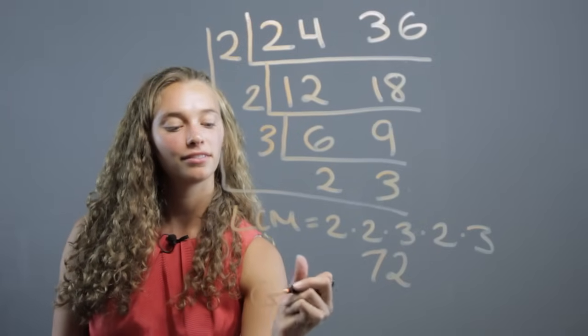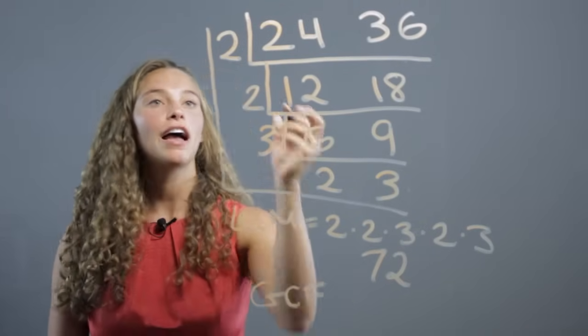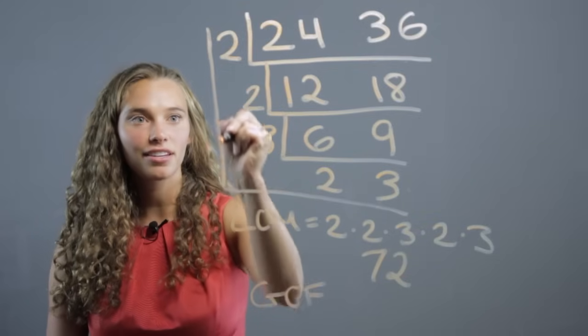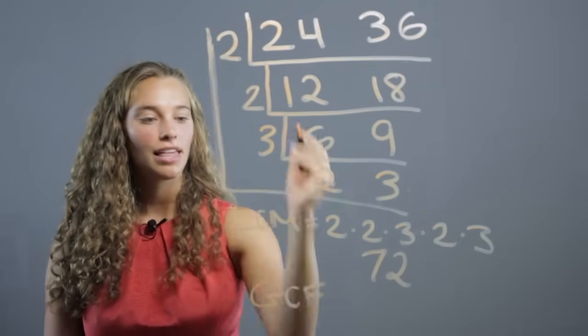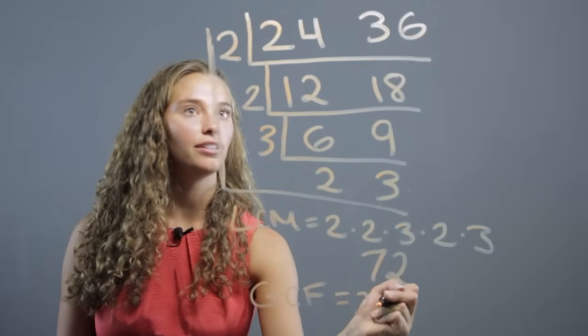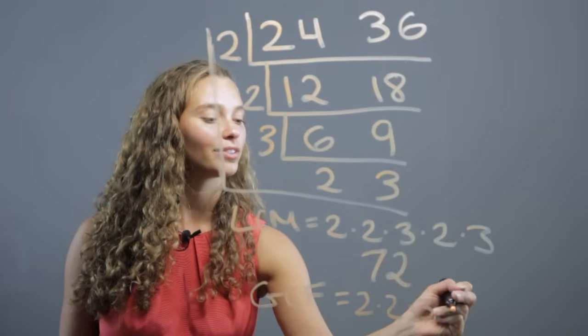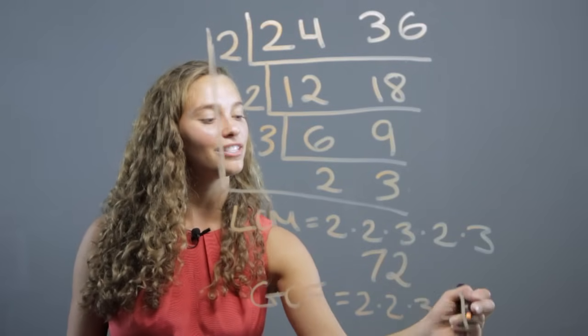The GCF you find by going straight down this line. That's going to be 2 times 2 times 3. 4 times 3 is 12.